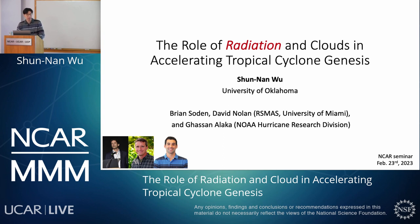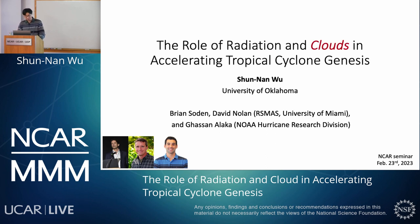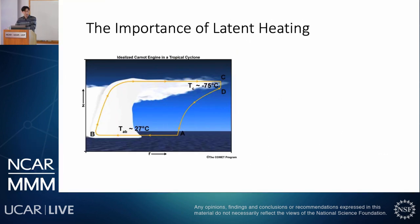The second keyword is radiation. Radiation is the main energy modulator for the Earth's systems. With radiative balance we can roughly estimate surface temperature, and with radiation and convection we can simulate large-scale circulation. Radiation is very important, and we want to examine its role in TC genesis. The third keyword is clouds. Clouds are part of a tropical cyclone, and they heavily modulate the radiation distribution and balance within the atmosphere, which is why we also pay attention to clouds.